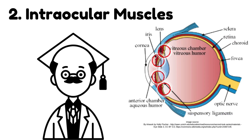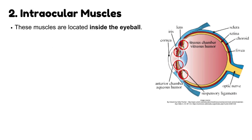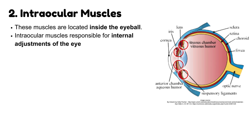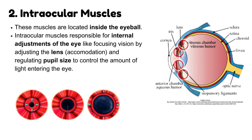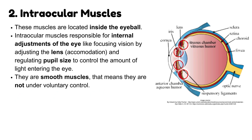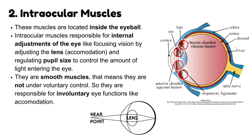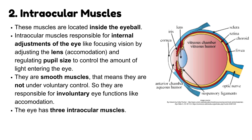The next group of muscles is intraocular muscles. These muscles are located inside the eyeball. Intraocular muscles are responsible for internal adjustments of the eye, like focusing vision by adjusting the lens (accommodation), and regulating pupil size to control the amount of light entering the eye. They are smooth muscles, meaning they are not under voluntary control, so they are responsible for involuntary eye functions like accommodation.